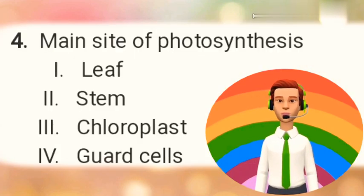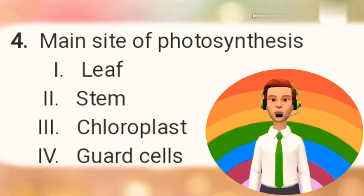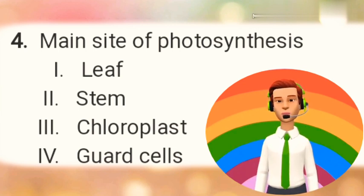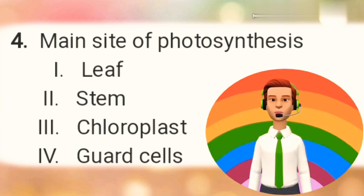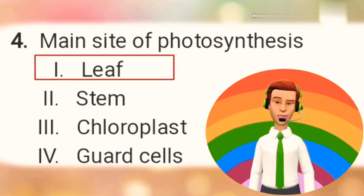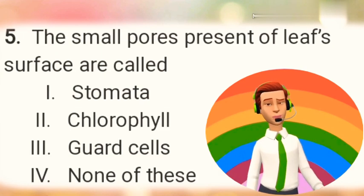Question number 4: Main site of photosynthesis? Option 1: Leaf. Option 2: Stem. Option 3: Chloroplast. Option 4: Guard cells. The right answer is Option 1 — Leaf.